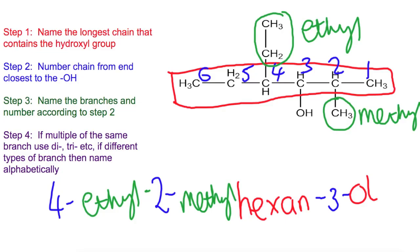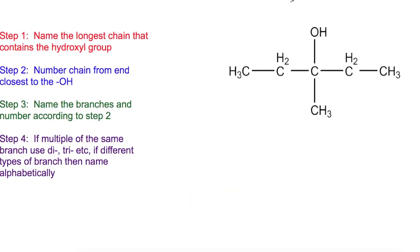Let's have a look at our next example. So here is our second example. Again we need to find the longest chain. So the longest chain here is again the one going through the middle. And we're going to number it so that the OH gets the smallest number possible. So you can go from either end. We're going to start from the left this time. One, two, three, four, five.